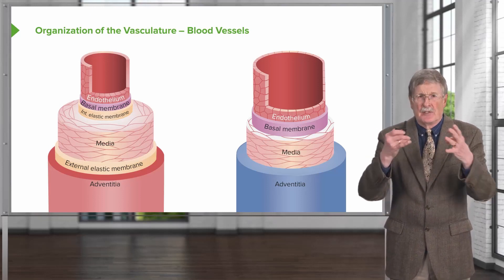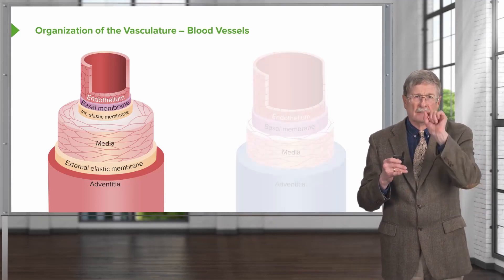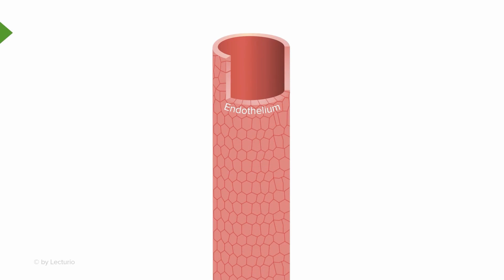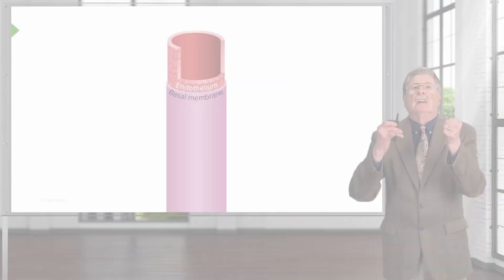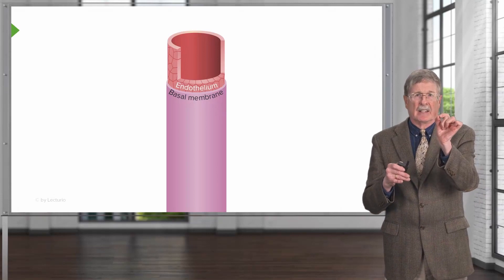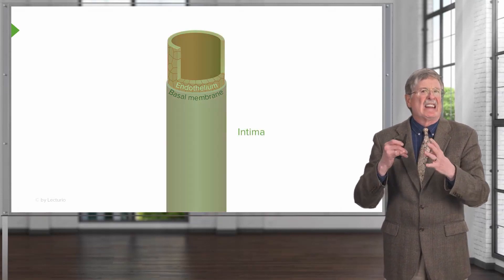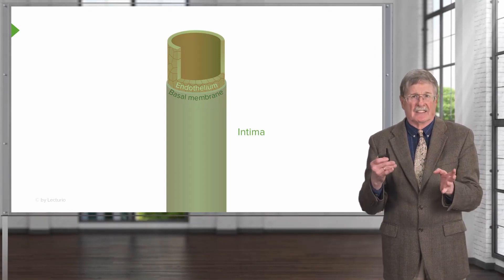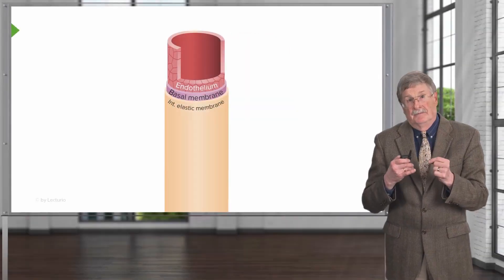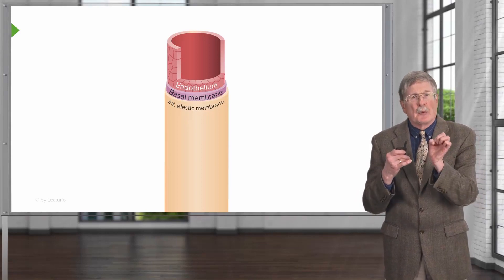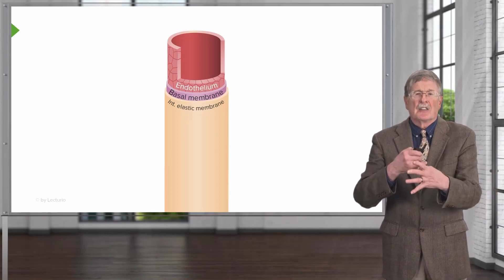Arteries and veins have the same general three layers, but they are put together slightly differently. In an artery, vessels everywhere in the body are lined by an endothelium, a simple squamous epithelial layer. It sits on top of a basement membrane, or basal lamina — they're all synonymous. The endothelium and the basement membrane it sits on are called the intima, the innermost layer of all blood vessels.